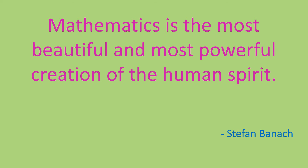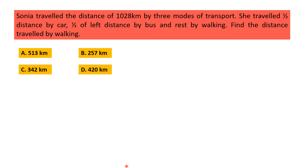Hello everyone, namaste, welcome to all of you. We will continue doing sums on measurement. Sonia traveled a distance of 1028 kilometers by three modes of transport. She traveled half the distance by car, half of the left distance by bus, and the rest by walking. Find the distance traveled by walking. Option A: 513 km, Option B: 257 km, Option C: 342 km, Option D: 420 km.